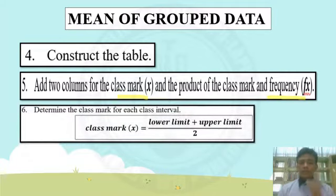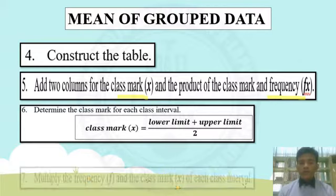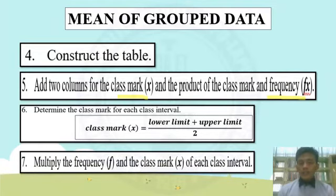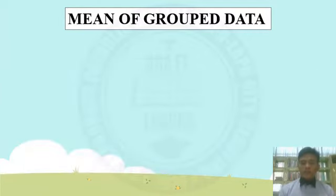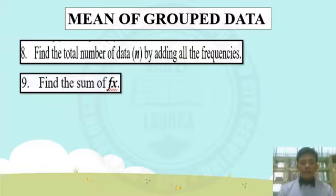Step 6: the class mark x equals the lower limit plus the upper limit, divided by 2. Step 7: multiply the frequency and the class mark of each class interval. Step 8: find the total number of data, n, by adding all the frequencies. Step 9: find the sum of fx.